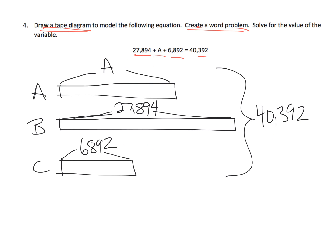And so there's lots of different kinds of questions we could ask, but essentially we're saying, this is how much B is. This is how much C is. We don't know how much A is, but the total is 40,392. Figure out what A is.